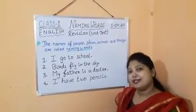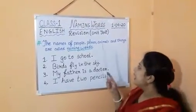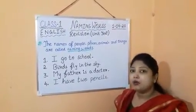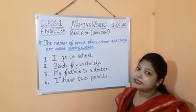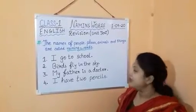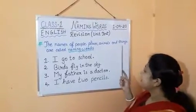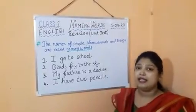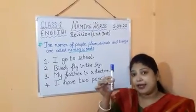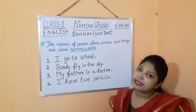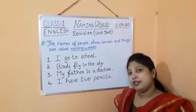Animals like cow, birds, dog, tiger etc. Things like scale, pen, fan, pencils etc.